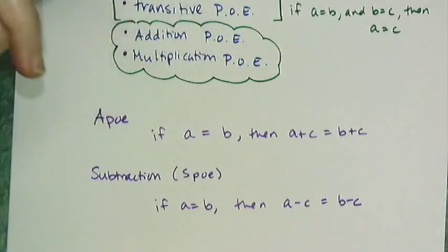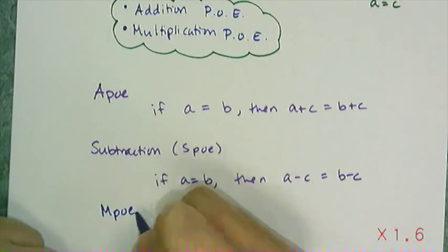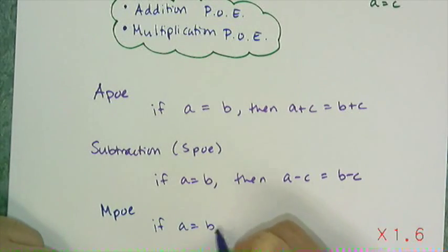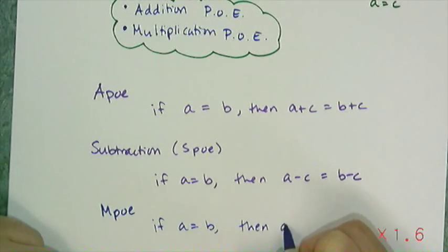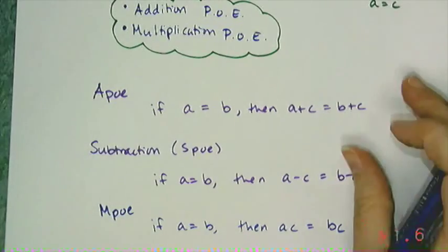And then I have the multiplication property of equality, which we're going to call MPO. So MPO says that if A equals B, then AC equals BC. So I can multiply both sides of the equation by the same quantity, and it's going to maintain its equivalence.